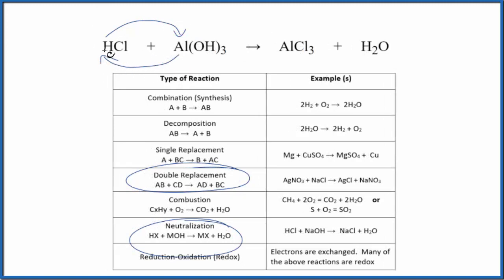So we start out with the hydrogen bonded to the chlorine. Then we end up with the hydrogen and the hydroxide. That gives us the H2O here. The aluminum, it ends up with the chlorine. We get aluminum chloride. So this is both a neutralization and a double replacement reaction.